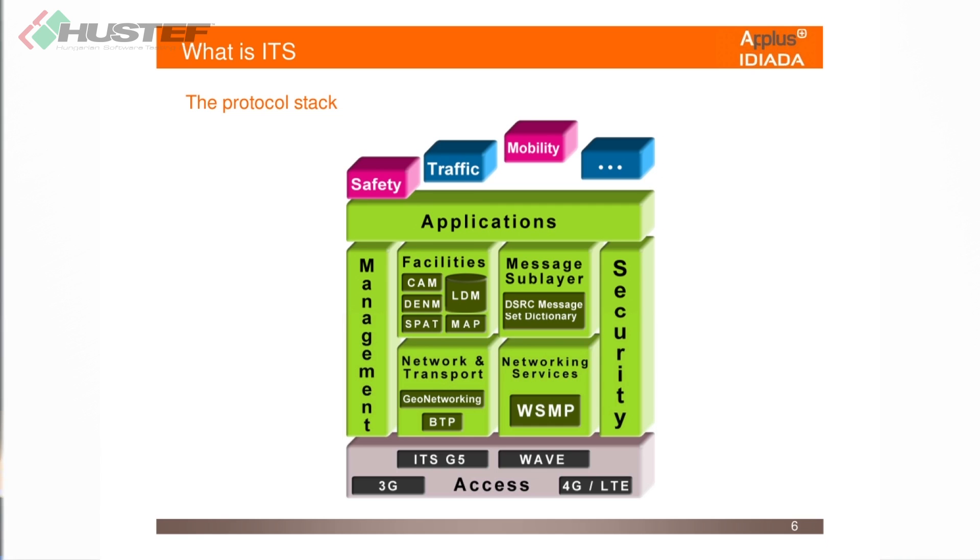This is a visualization of the stack I just described. The access layer is quite flexible — you can have 3G or 4G networks, but the most common approach the industry is taking is ITS-G5, which is a modified version of normal Wi-Fi 802.11a. The modification is called 802.11p, which accounts for the Doppler effects given the velocity of vehicles. After that, you have the network and transport protocols, then the facilities, and on top of that the applications you can build.